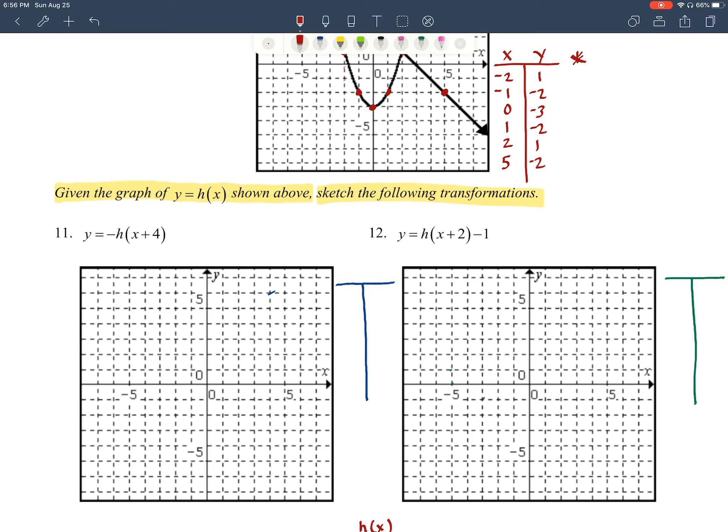So number 11 says y is equal to the opposite of function h, and then we're going to add 4. So if we think about our transformations that are happening here, we've got that negative in here, which is like our negative stretch factor. It should change our orientation. And then we have this plus 4 with our x, which means that we're going to shift our graph to the left 4. So we're going to flip this graph.